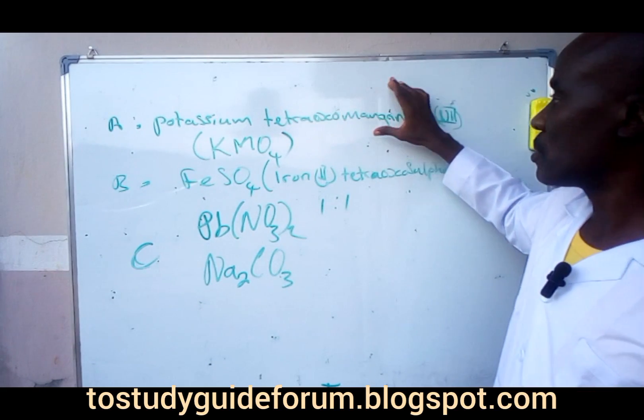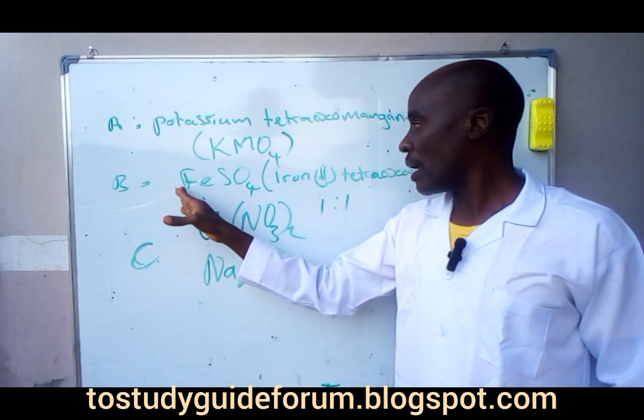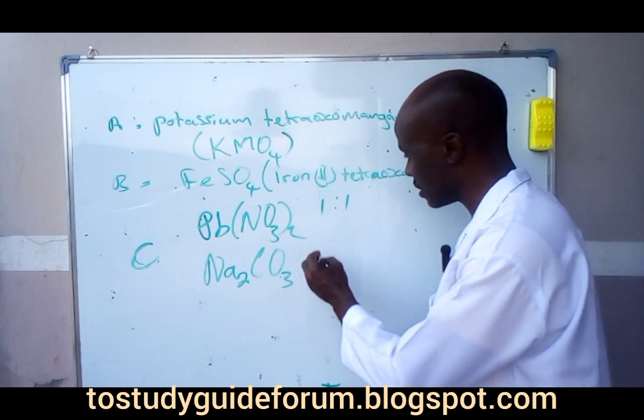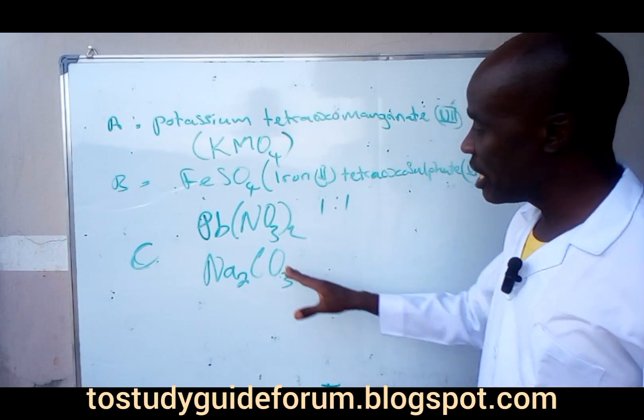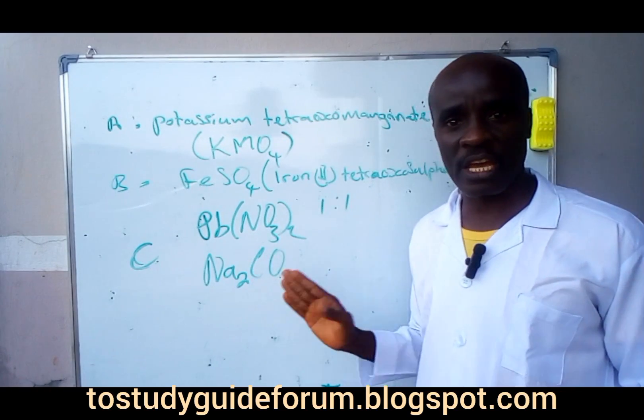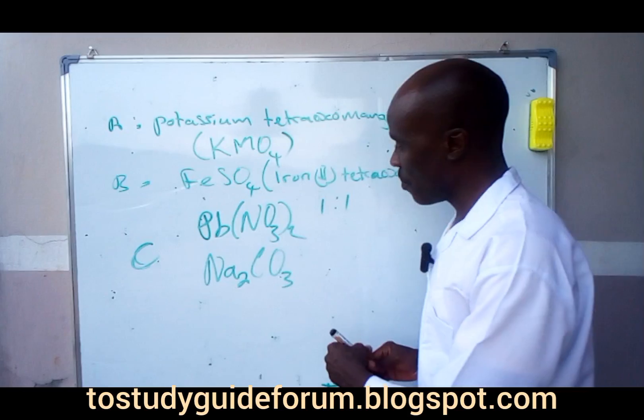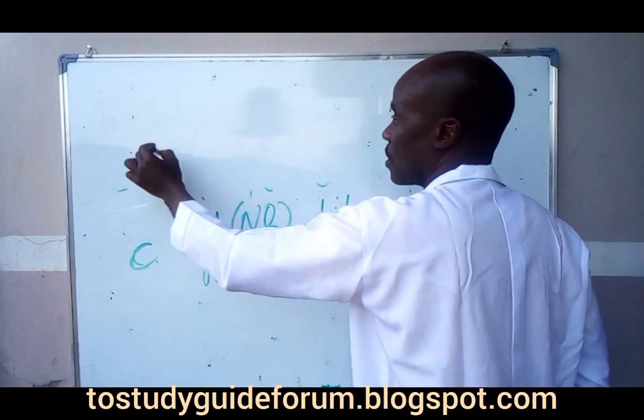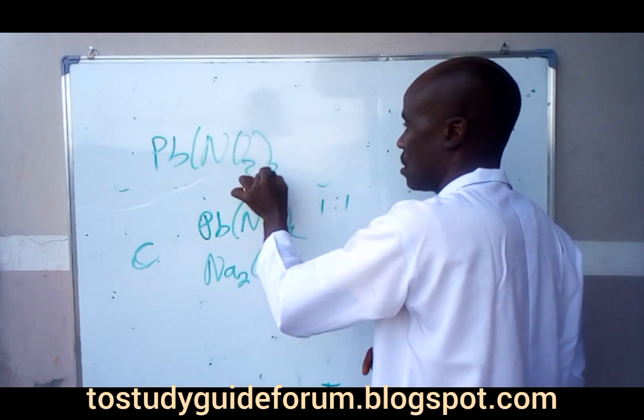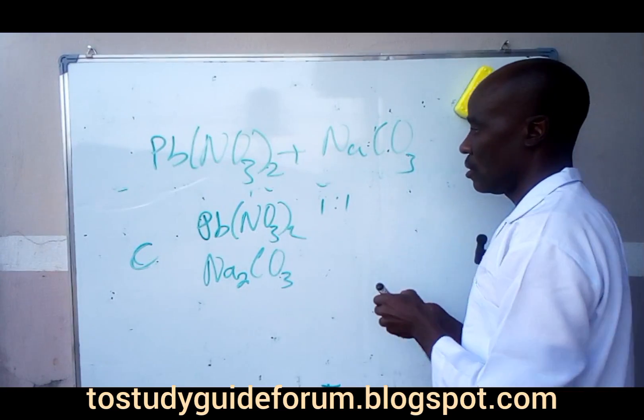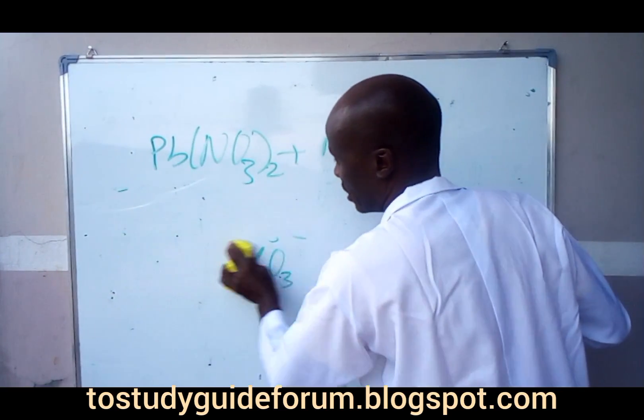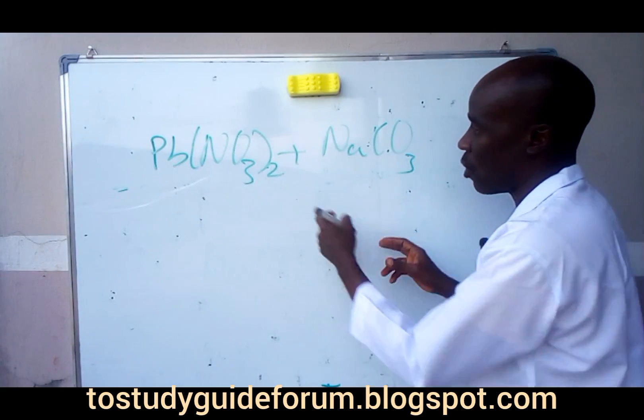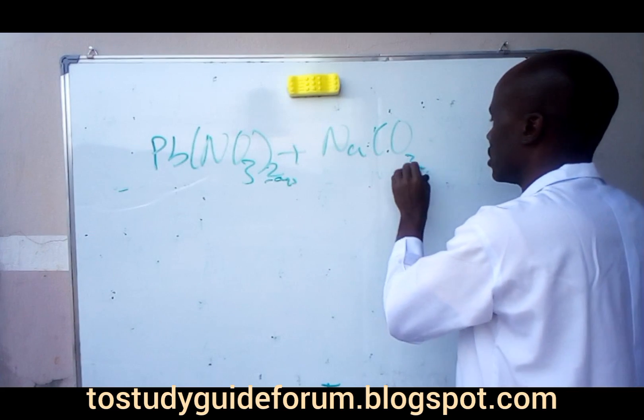In this other volumetric analysis, A is potassium trioxomanganate(VII) and B is iron(II) tetraoxosulfate(VI). In this case, what I want you to look out for is that this thing is two soluble salts. That means in a mixture of these, there is the possibility you're going to see a double decomposition take place here.